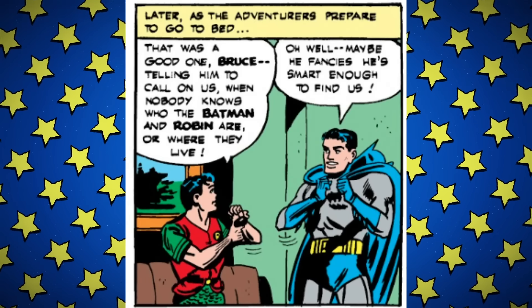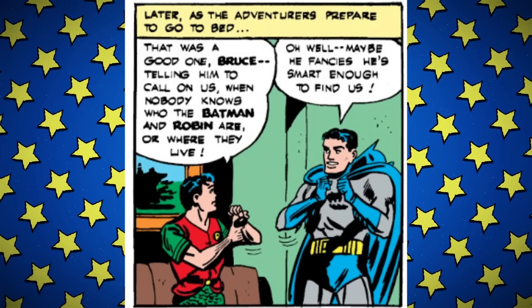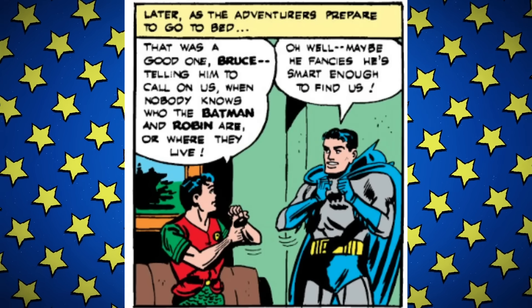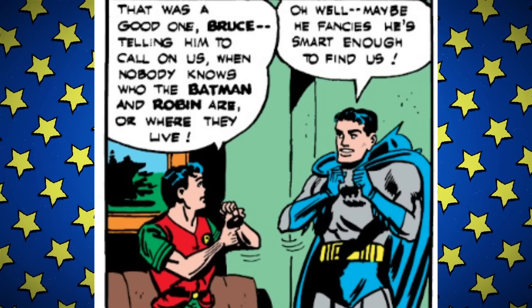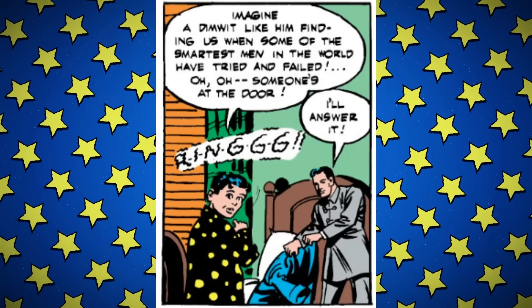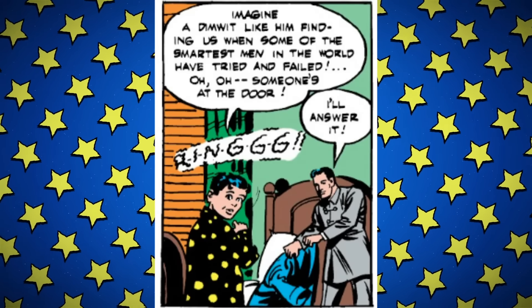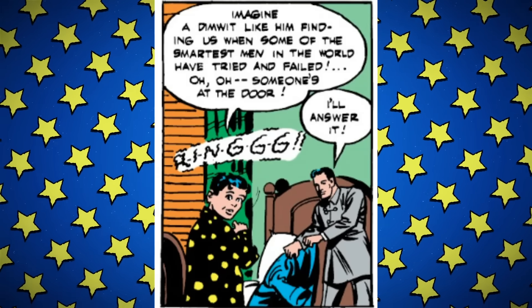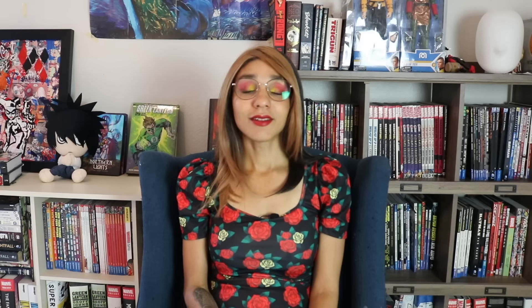Batman pulls this ultra sassy maneuver of saying sure, why not — Alfred could come over and discuss it — but then doesn't give him his address. Batman be like 'yeah I'll call you later.' As the adventurers prepare to go to bed: 'That was a good one, Bruce, telling him to call on us when nobody knows who Batman and Robin are or where they live. Imagine a dimwit like him finding us when some of the smartest men in the world have tried and failed.' Then — doorbell.